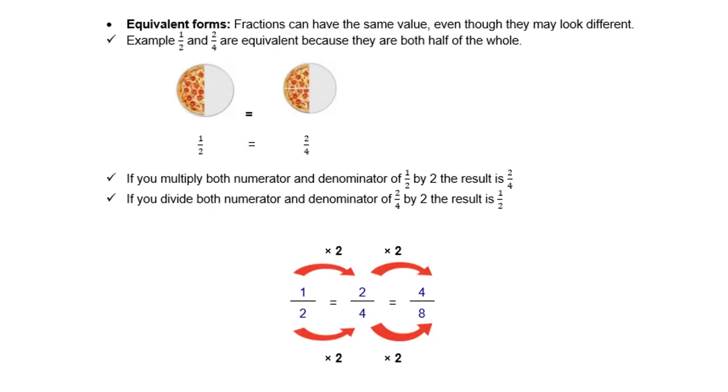Equivalent forms or equivalent fractions. Fractions can have the same value, even though they may look different. For example, a half and two quarters. They are equivalent because they are both half of the whole. You can look at the diagrams there. A half equals two quarters.